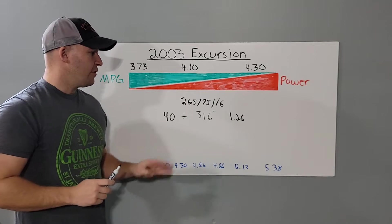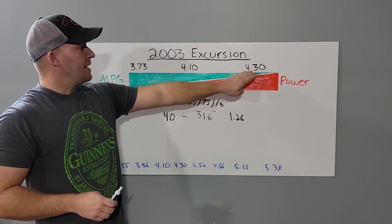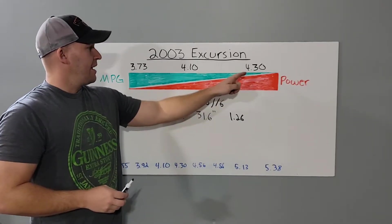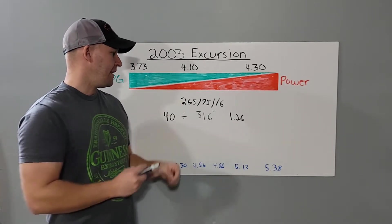From the factory, mine came with a 4.30. And so I take the 4.30 and I multiply by 1.26 and that gives me 5.41.